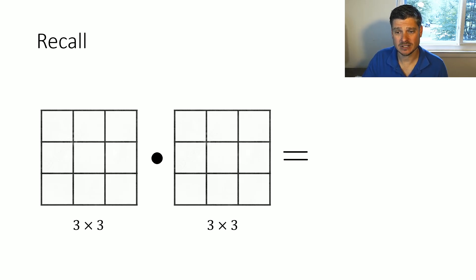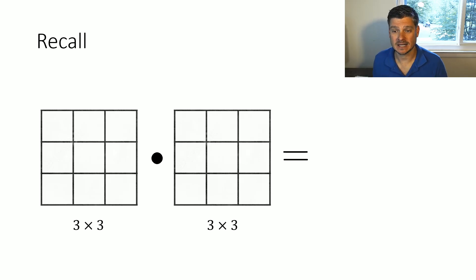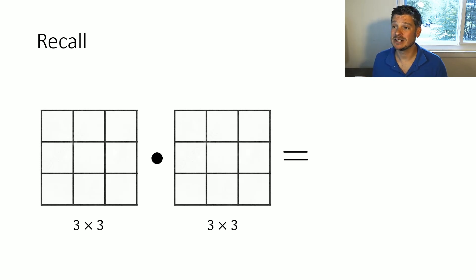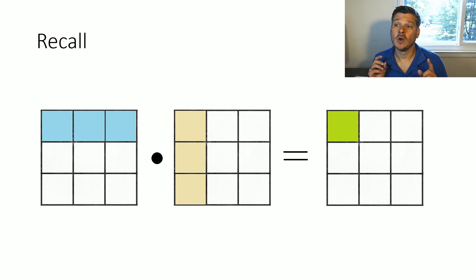When we do matrix multiplication, it's important that we look at the dimensions. We have to make sure that the number of columns of my first matrix matches the number of rows of my second matrix. We're going to call them the left matrix and the right matrix, because as we saw before, the order that we multiply matrices matters. It's not like regular arithmetic where two times three and three times two give the same number — matrix multiplication does not work that way.